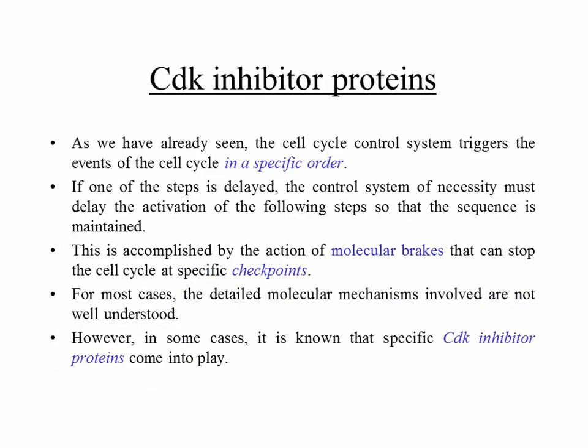The cell cycle control system triggers the events of the cell cycle in a specific order: M phase, followed by G1, followed by S phase, followed by G2, then M phase again. If one of the steps is delayed, the control system must delay the activation of the following steps. If you don't finish DNA replication, you cannot do mitosis. This is accomplished by molecular brakes that can stop the cell cycle at specific checkpoints.